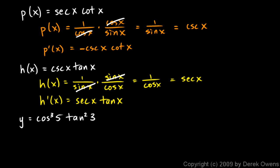And then the last one, y equals cosine cubed of 5 times tangent squared of 3. And you might be thinking, well, we could try to simplify this sum or do a product, but think here, think carefully. The answer here, y primed, is 0.